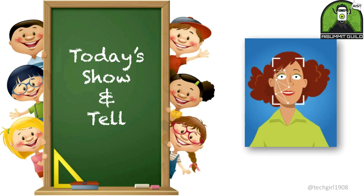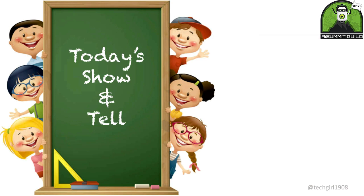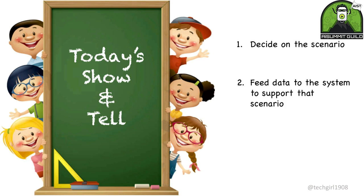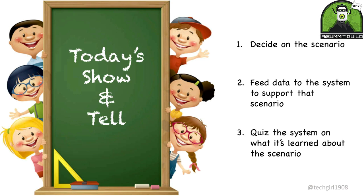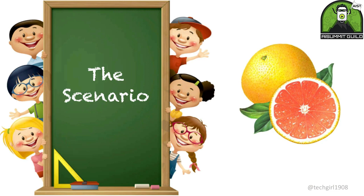Today we'll use machine learning to identify images, much like social media networks such as Facebook that want to tag your friends when you upload photos. We'll have a look at how this is done using a very simple use case. If we wanted to test the use of machine learning, we could essentially do so in three steps: one, we decide on the scenario; two, we feed data to the system that supports that scenario; and three, we quiz the system on what it's learned about the scenario. Today we're going to use IBM Watson's visual recognition service to teach the system how to recognize two different fruits: grapefruit and lemon.